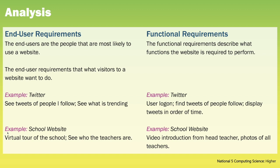as a user of Twitter I want to be able to see the tweets of people that I follow. The functional requirements are what the developer must do to ensure that the website meets the end user requirements. For example with Twitter the developers will ensure there's a logging feature and then the ability to find the tweets of the people that I follow before displaying them in chronological order.